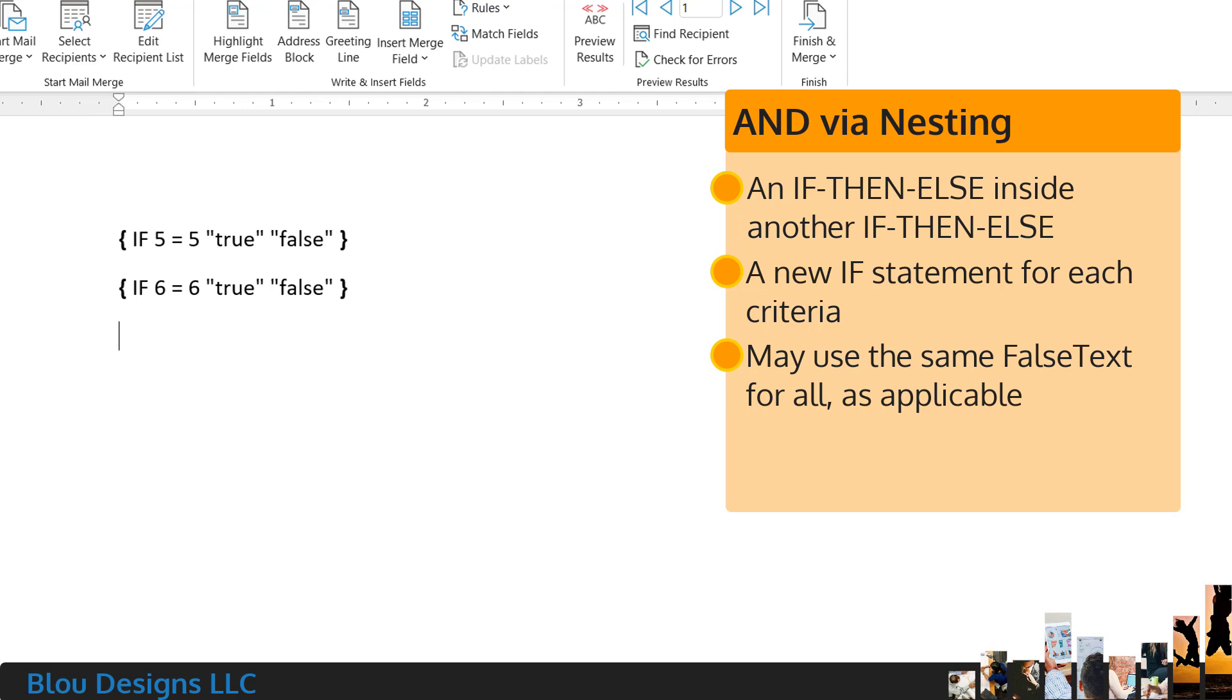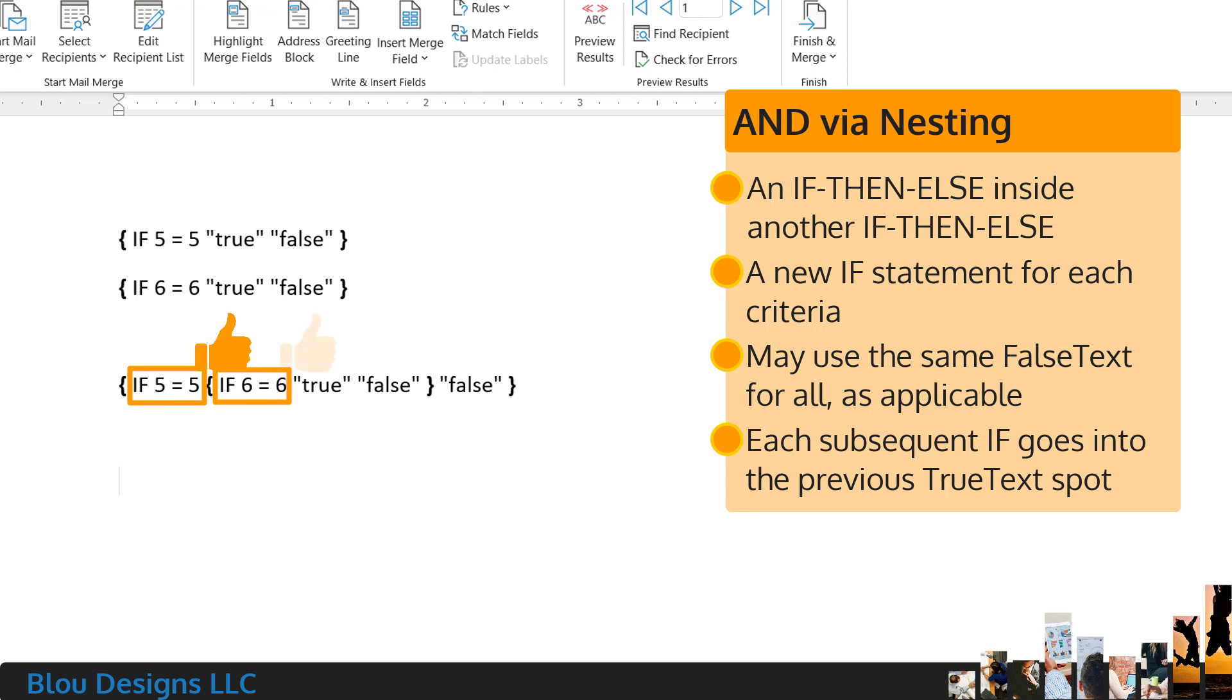To check if both are true at the same time, we'll nest the check for 6 equals 6 inside the check for 5 equals 5 by moving the entire if-then-else for the 6 equals 6 into the true text spot of the check for 5 equals 5. And now you can see that we'll first check if 5 equals 5. And if it is, then we'll check if 6 equals 6. And if that's true too, then we get the true text. And in all other cases, we get the false text. So that's nesting if-then-else.